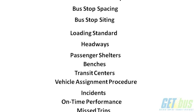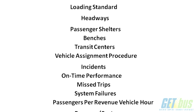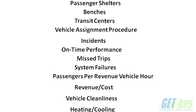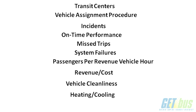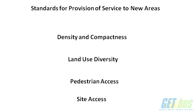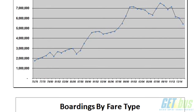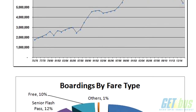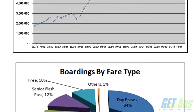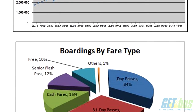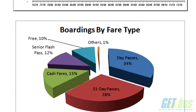There's quite a list of areas that are addressed. We also have standards for provision of service to new areas. When there are requests for service to a new area, we look at different characteristics. Density is really important — the denser an area is, the better the chances for a successful fixed route. All of those characteristics are addressed in that section.